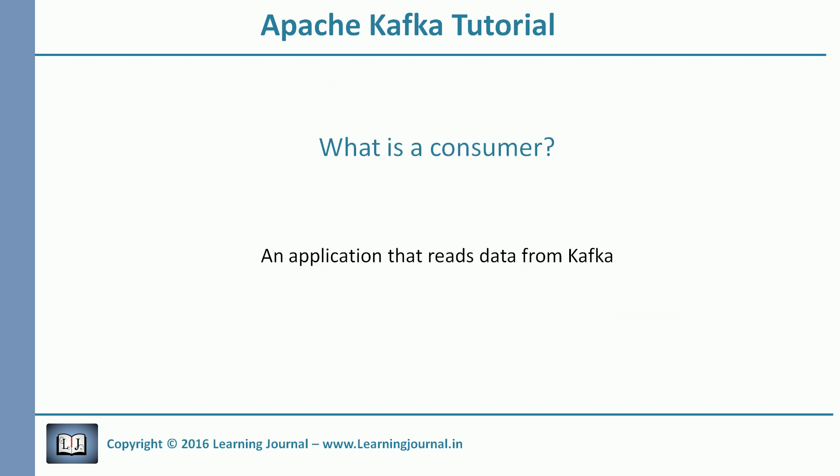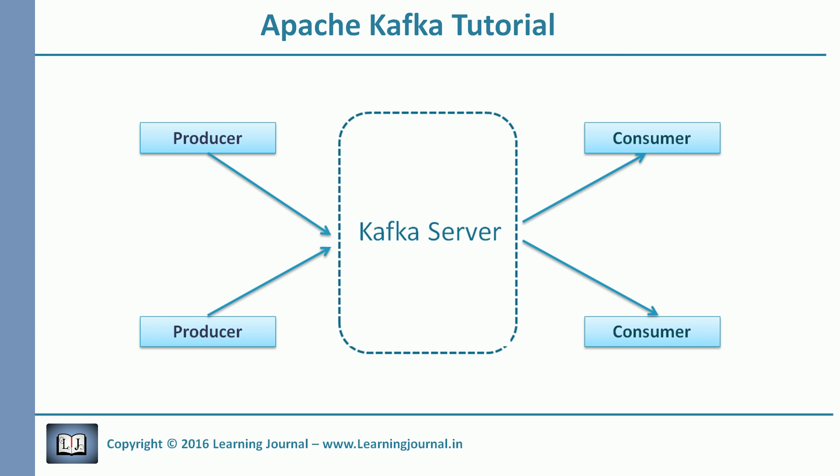The next thing is the consumer. The consumer is an application that receives data from Kafka. If producers are sending data, they must be sending it to someone — the consumers are the recipients. But remember that the producer doesn't send data to a recipient address; they just send it to the Kafka server. Anyone who is interested in that data can come forward and take it. An application that requests data from a Kafka server is a consumer, and they can request data sent by any producer, provided they have permissions to read it.